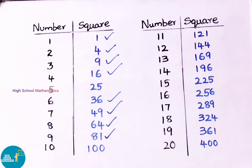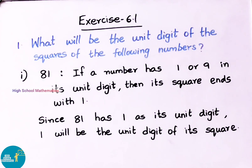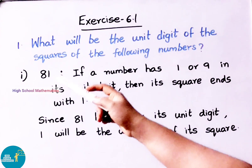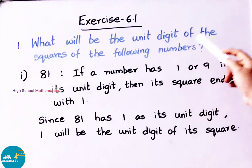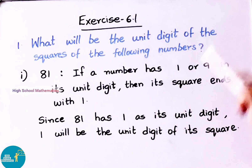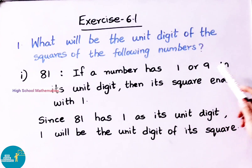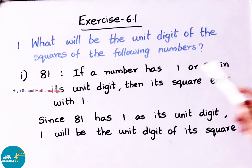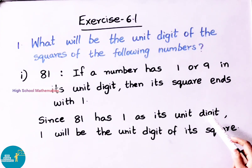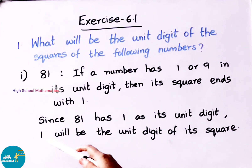Now let us see the Exercise 6.1 sums. First question: What will be the unit's digit of the squares of the following numbers? See the first one — 81 is the given number. If a number has 1 or 9 in its unit's digit, then its square ends with 1. Since 81 has 1 as its unit's digit, 1 will be the unit's digit of its square.